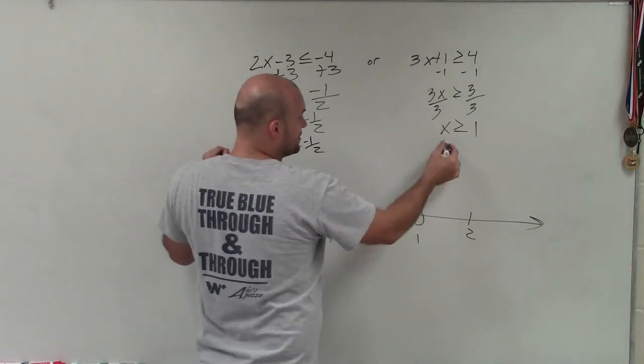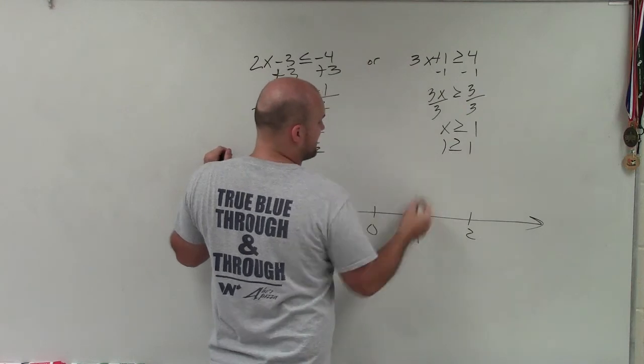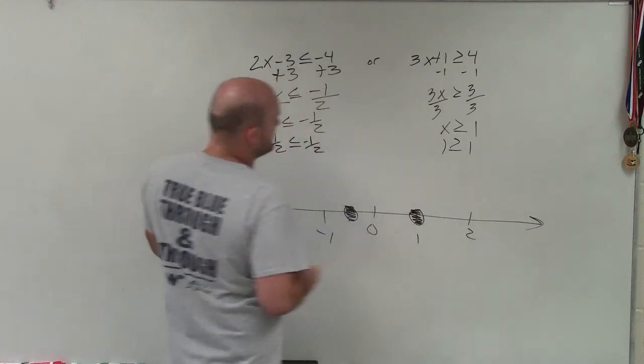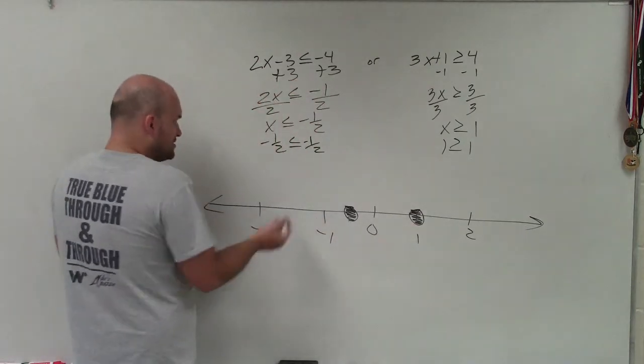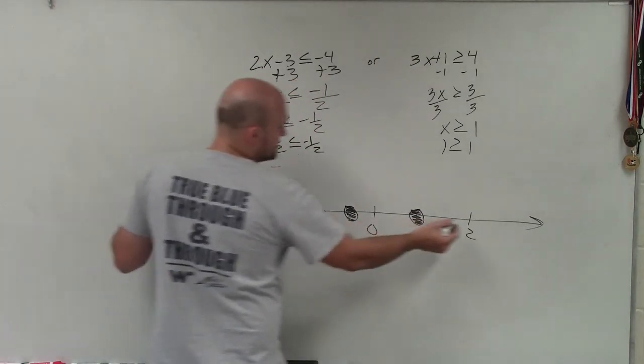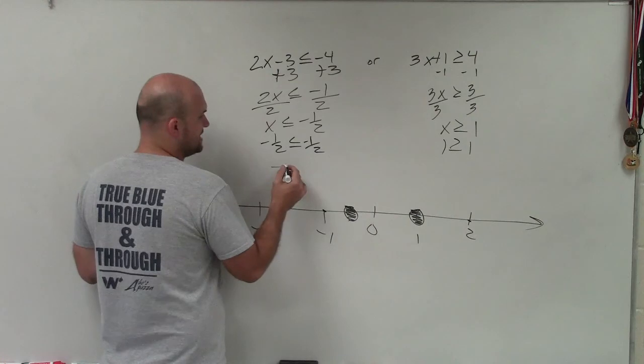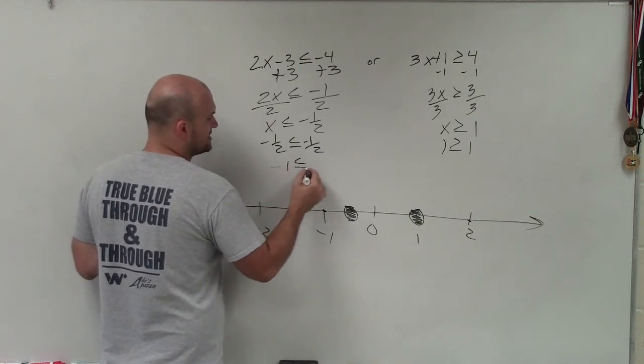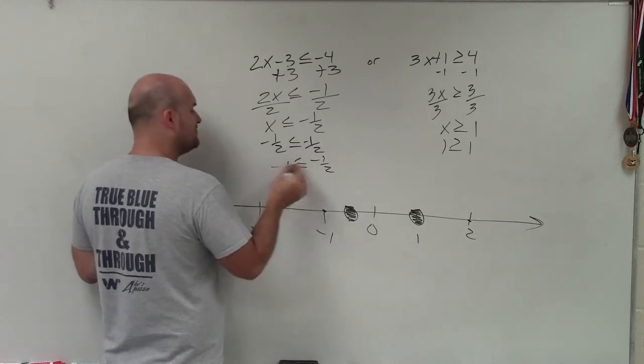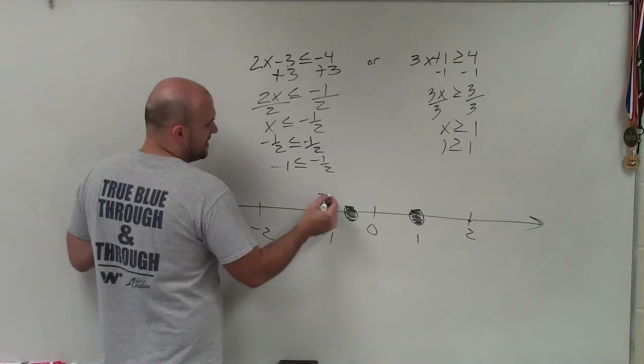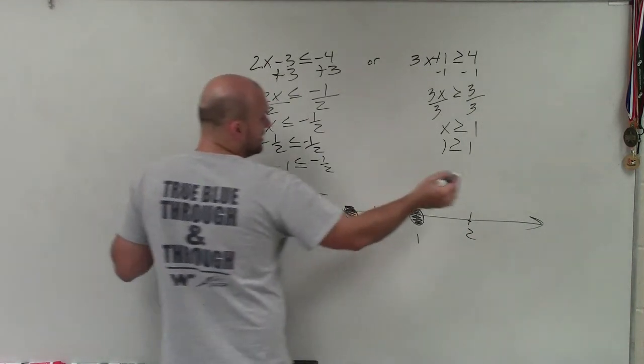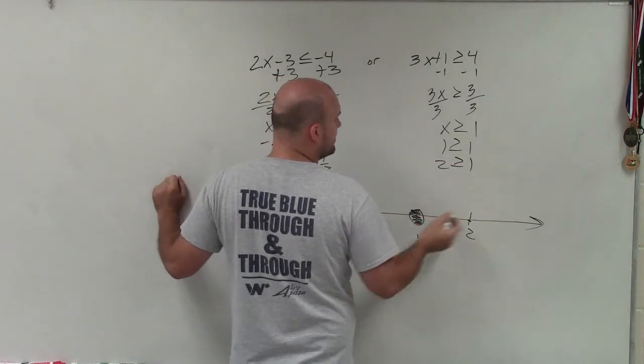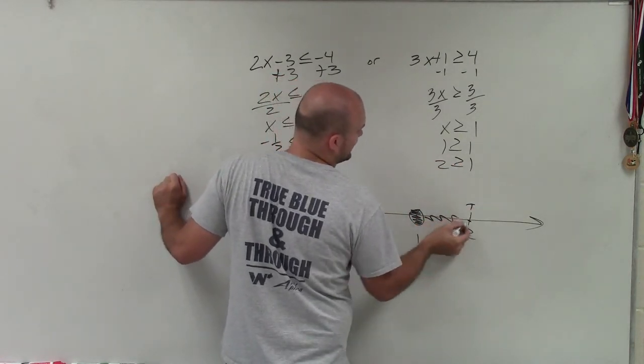Since this is greater than or equal to, it's going to be true at that value as well. So it's a part of the solution. Now, as far as shading where are all my solutions, just use test points. I'll use a test point here, and I'll use 2. So that's negative 1 is less than or equal to negative 1 half. Is negative 1 less than or equal to negative 1 half? That's true. So therefore, I shade to the left. Is 2 greater than or equal to 1? That's true. So I shade this one to the right.